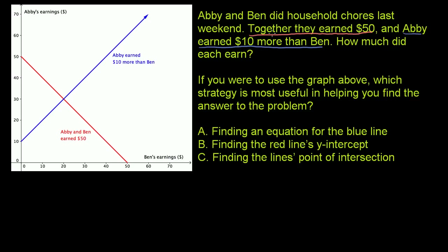That first statement: together they earned $50. What does that tell us? Well, if we say that Abby's earnings are represented by A, and Ben's earnings are represented by B, that tells us that A plus B must equal $50. Abby's earnings plus Ben's earnings are $50 — together they earned $50.